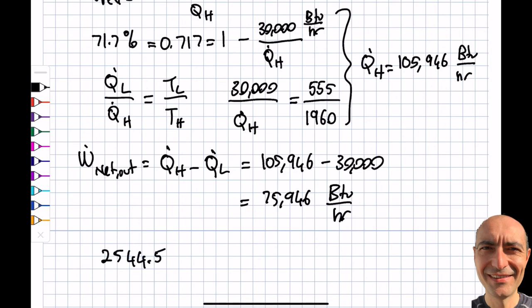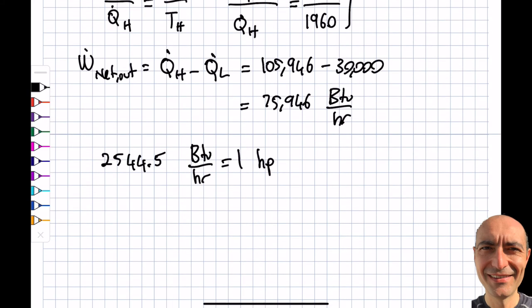The conversion factor is 2544.5 BTU per hour equals one horsepower. Dividing 75,946 by 2544.5 gives the engine output as 29.85 horsepower.